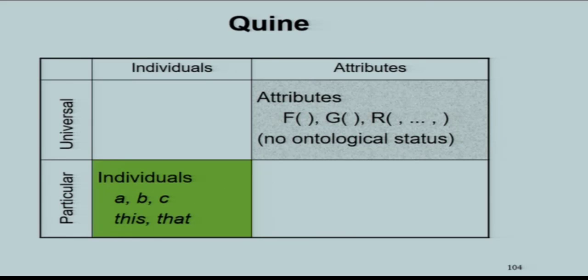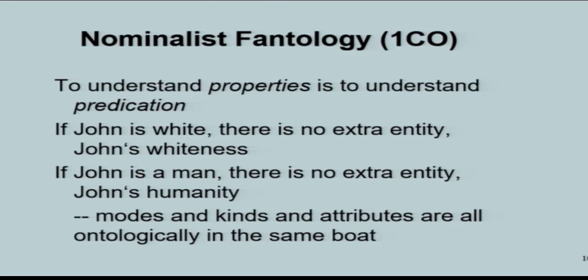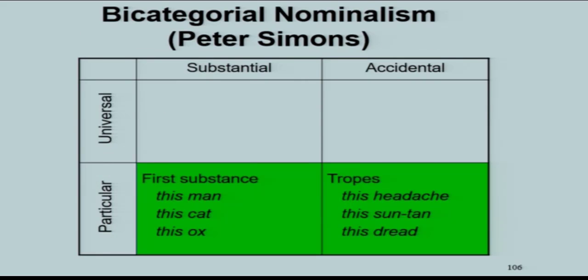Then there is Quine, for whom there are only individuals, and there aren't really any sets either. The only things which we quantify over are individuals. And then there are nominalists, and there are some more sophisticated nominalists who hold that there are both substantial particulars and accidental particulars, but they're all particulars. There are no universals of any sort, no sets, no Platonic entities, no universals, just particulars.